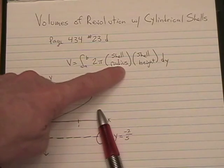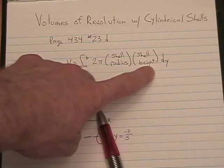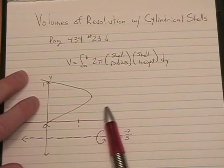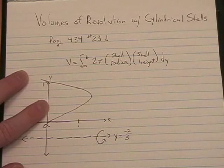And then it's 2 pi times the shell radius times the shell height times dy. Now, how do you get the shell radius and the shell height?